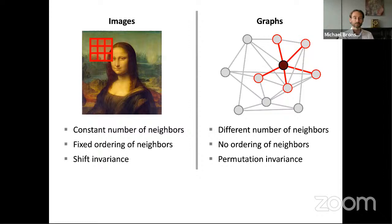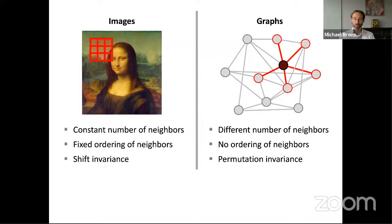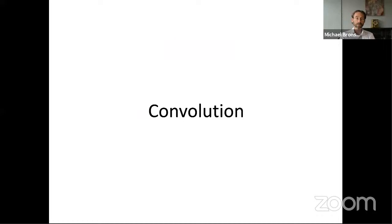What is the difference between images and graphs? In an image, the function is organized on a grid with a constant number of neighbors for each pixel and a fixed ordering of neighbors. On a graph, we have a completely different picture — the number of neighbors for each node can vary greatly, the ordering of neighbors is not given, and even the notions of invariance are different. In images we talk about translation invariance; in graphs we talk about permutation invariance. There are three things we try to achieve: how to generalize filtering operations on graphs, how to generalize pooling, and how to do this efficiently.